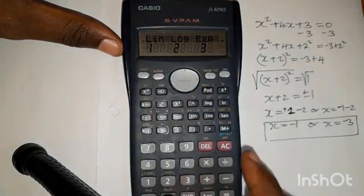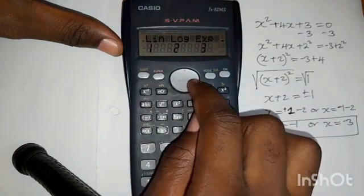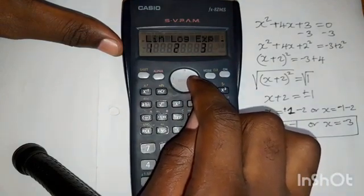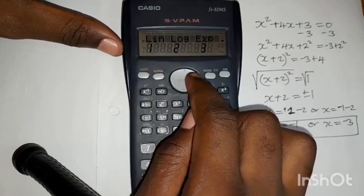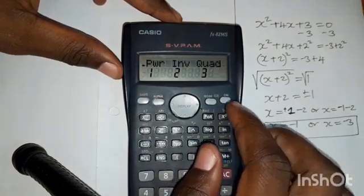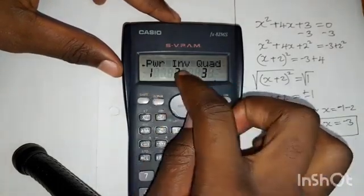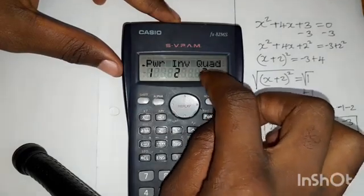So after clicking three, you come to this right key here. Press the right key, like this. Now you see that after pressing the right key, you have these options. So you have one, two, three.